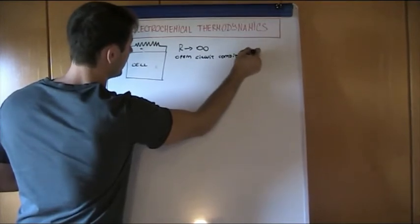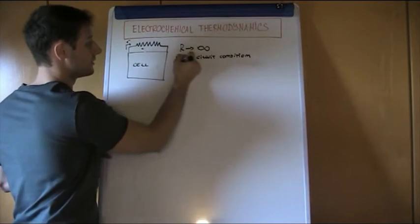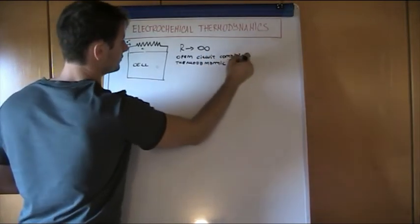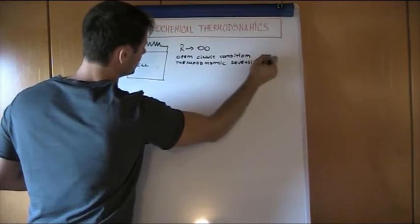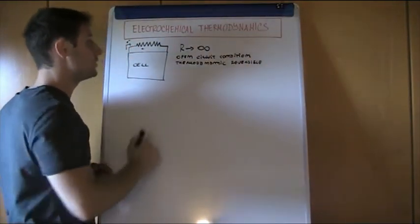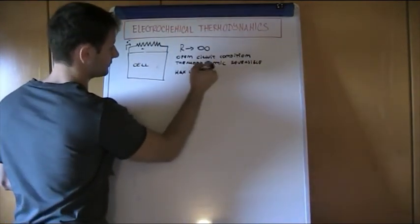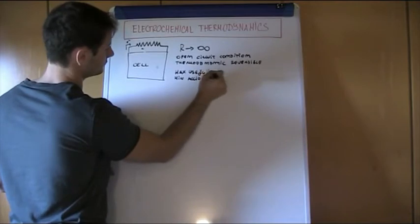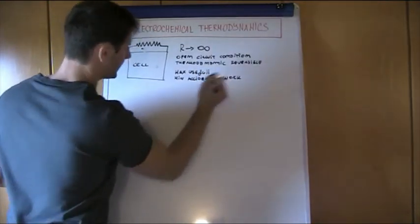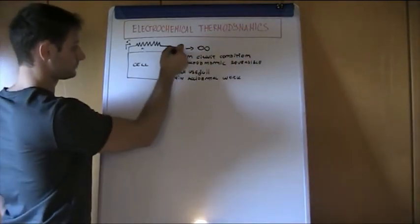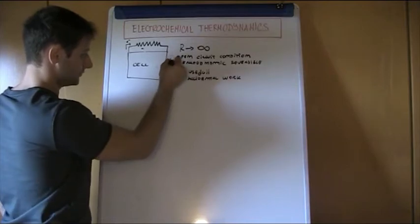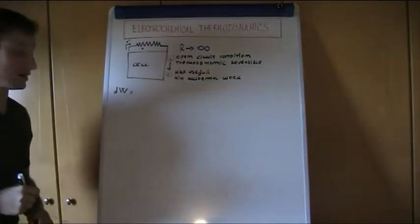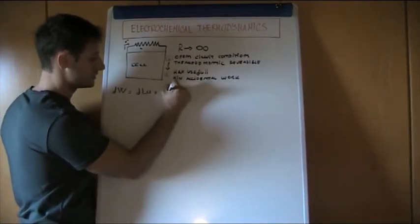We know very well that when we are in open circuit condition — so in thermodynamically reversible condition — we have the minimum entropic contribution and we have the maximum useful work. So we have the maximum useful work and, at the same time, the minimum accidental work. In this case, with these surrounding conditions, we can say that the total work is equal to the sum of the useful work plus the accidental work.